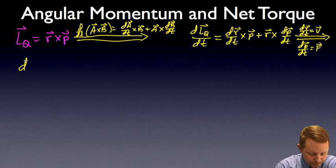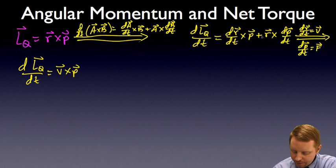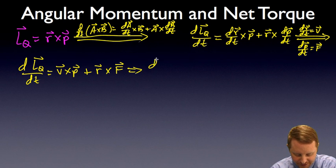So I could rewrite this now as the derivative of L about point Q with respect to t equals dr/dt, that's v, crossed with p, plus r crossed with f. Notice here that we have velocity and momentum crossed with each other. They're in the same direction since p equals mass times velocity. Velocity and momentum are in the same direction, so their cross product is going to be zero.